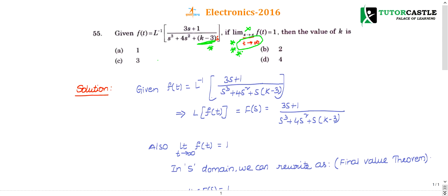The limit as t tends to infinity of f(t) should be 1, then what is the value of k? It's a very simple question based on the final value theorem in Laplace transforms.